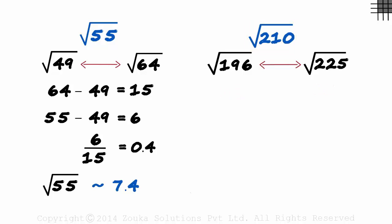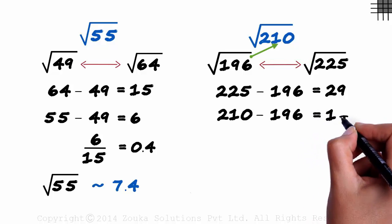Now we just need to find out two things. How far 225 and 210 are from 196? 225 minus 196 gives us 29. And 210 minus 196 gives us 14.